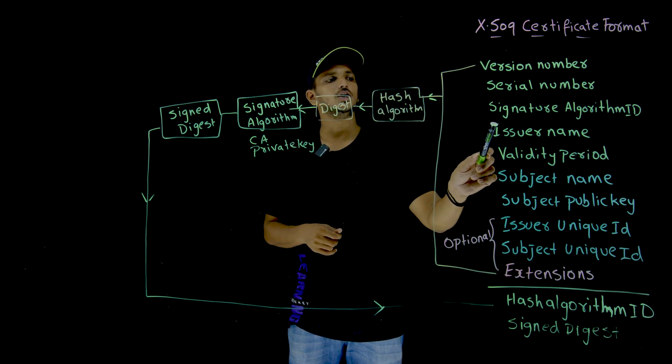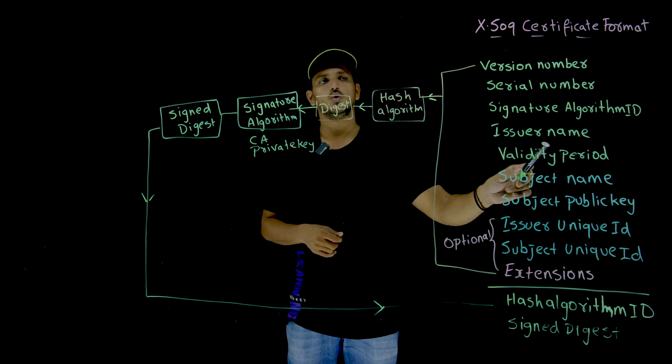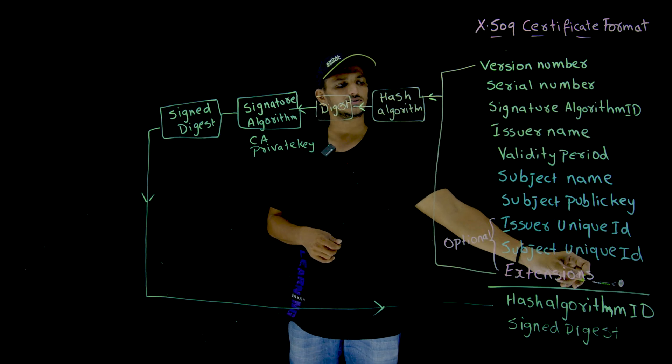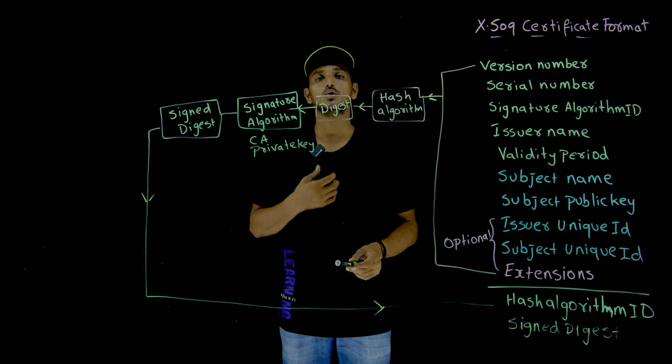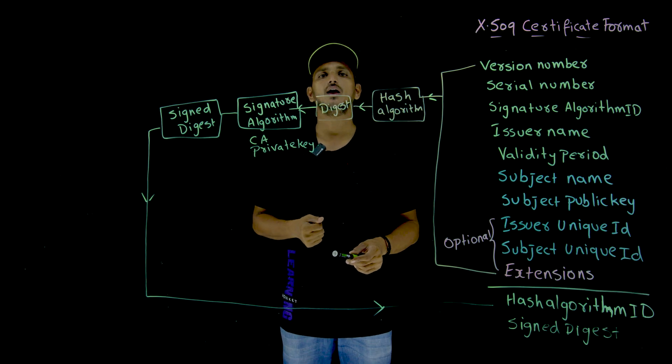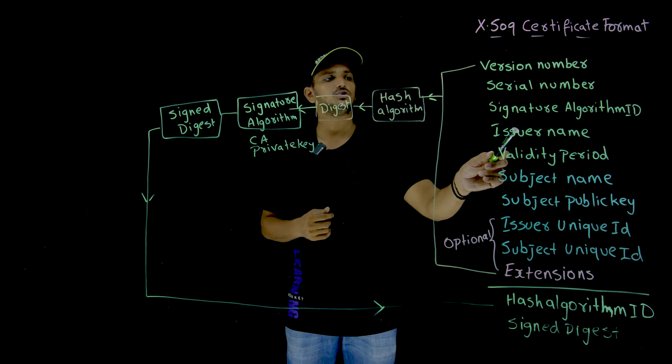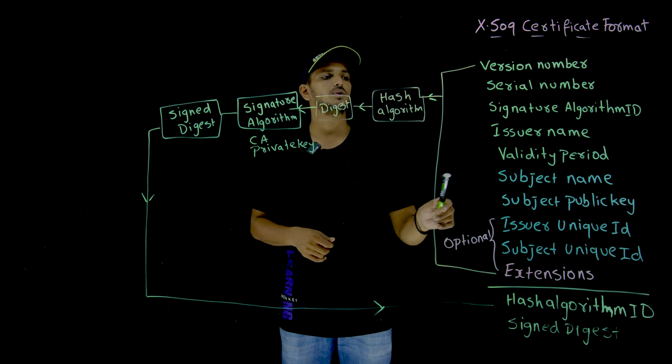Similarly, next one is issuer name. Who is issuing this certificate? In our example, in our last class, we discussed one of the example who provide digital certificates are GoDaddy. So issuer name, GoDaddy is the issuer name.